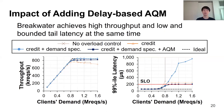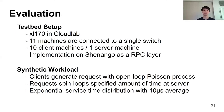Equipped with all three key components — credit-based admission control, demand speculation, and delay-based AQM — Breakwater achieves high throughput while maintaining low and bounded tail latency.